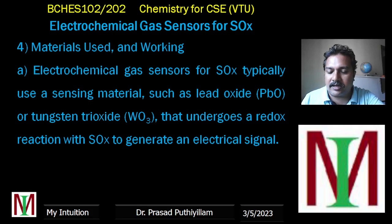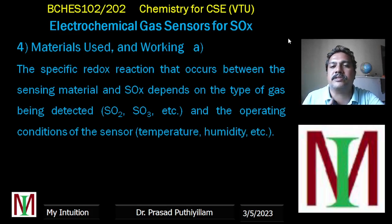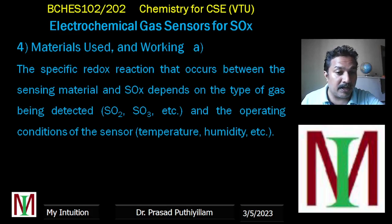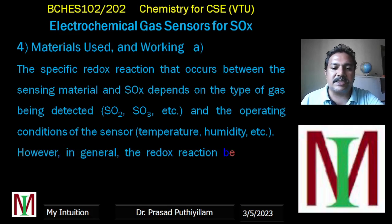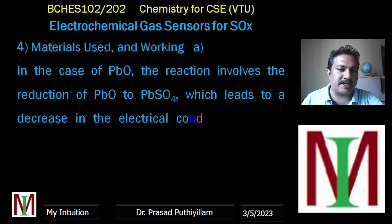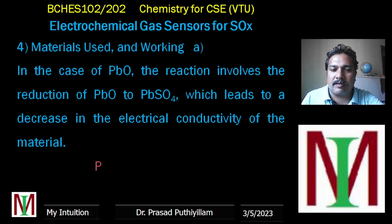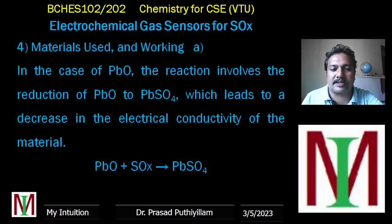Continuing: the specific redox reaction that occurs between the sensing material and SOX depends on the type of gas being detected — mainly SO2 or SO3 — and the operating conditions such as temperature, humidity, and pressure. In the case of lead oxide (PbO) used as the sensing material, the reaction involves the reduction of lead oxide to lead sulfate (PbSO4), which increases the electrical conductivity of the material. The reaction is: PbO + SOX → PbSO4.